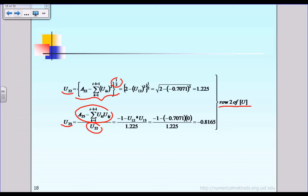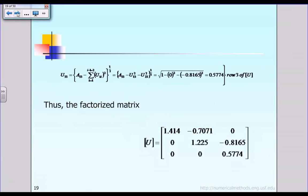All terms on the right-hand side are known, so we can calculate them. The final answer for U22 is 1.225, and the value for U23 is shown. Lastly, the diagonal term U33 is calculated based on the formula or picture shown earlier. After substituting numerical values, U33 equals 0.5774.